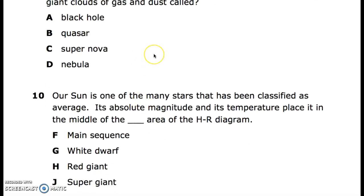10. Our sun is one of the many stars that has been classified as average. Its absolute magnitude and its temperature place it in the middle of the blank area of the HR diagram. F. main sequence, G. white dwarf, H. red giant, J. supergiant.